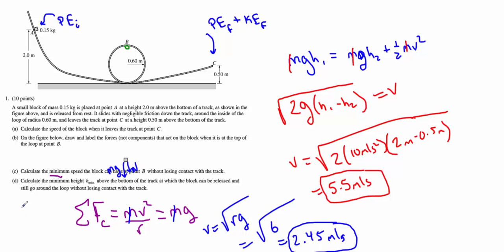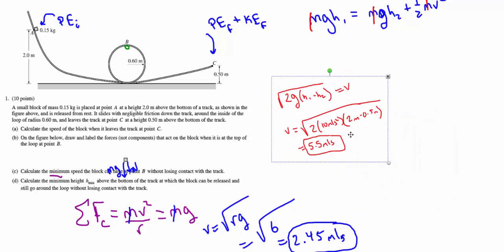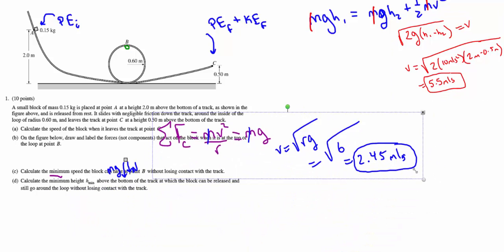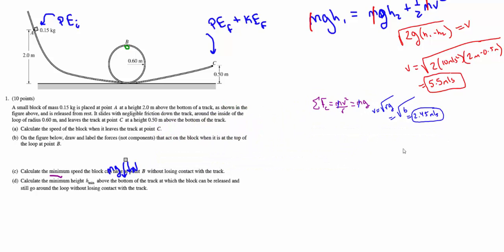Alright, that's the minimum speed here. Now, let's go away down to D. Calculate the minimum height above the bottom of the track, at which the block can be released, and still go around the loop without losing contact with the track. There's a ton of different ways I can solve for this. I'm going to use kind of more of a conceptual approach. So, this is more universal for other style problems, similar to this. I need to kind of clean up my workspace. And so, what we're saying here is, where does it need to be released from, such that it will indeed only have that 2.45 meter per second velocity here. No more, no less.